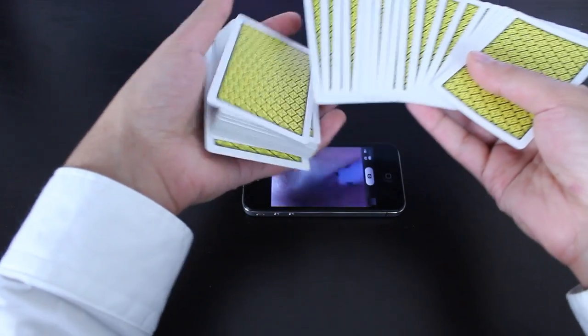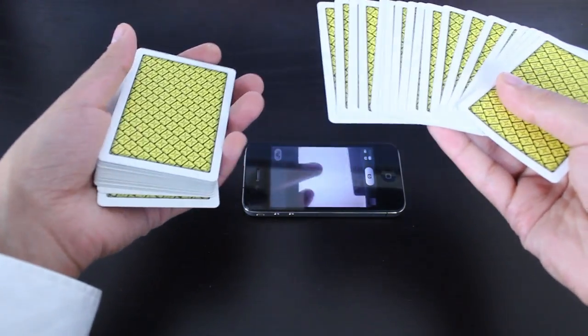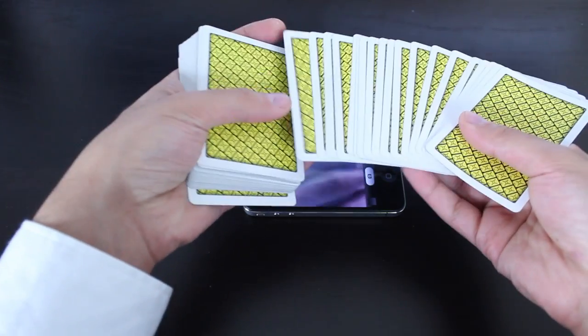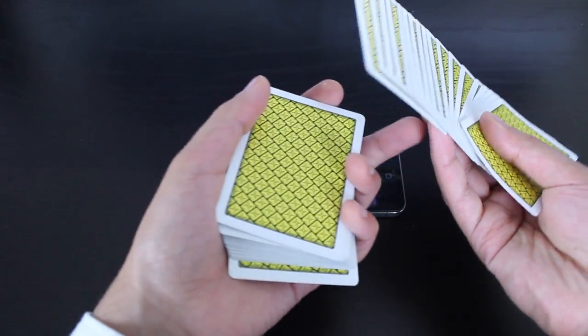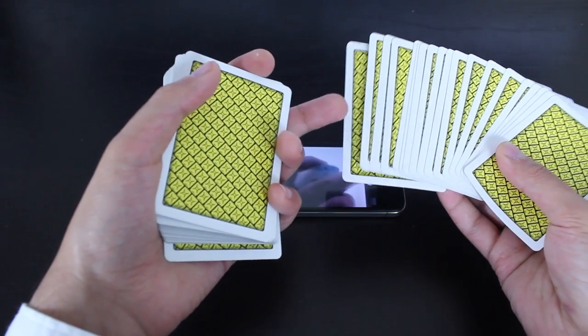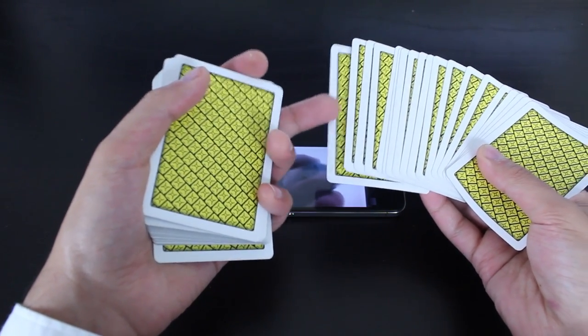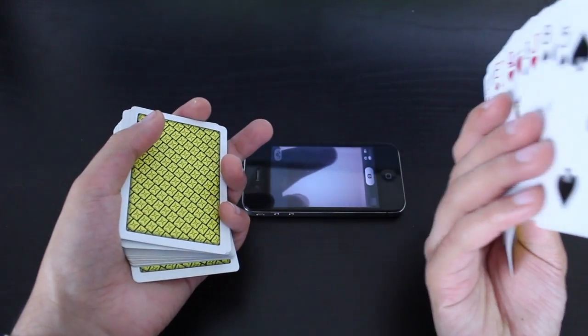Can you kind of see that? I don't know if this phone down there is really helping at all. But anyways, what you're going to do is your right hand fingertips are contacting the edge of the bottommost card of your right hand spread. See that?